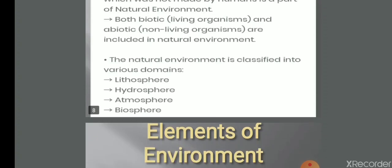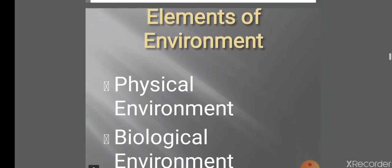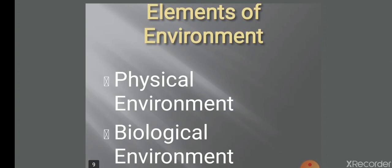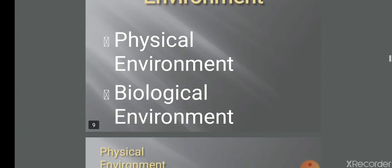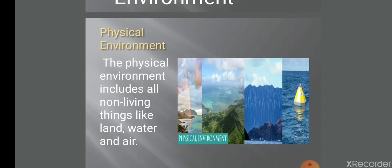Now elements of environment. There are two types of elements of environment: physical environment and biological environment. The physical environment includes all non-living things like water, land, and air.